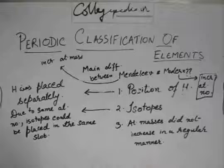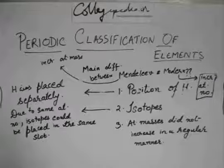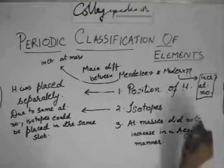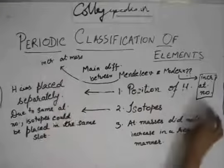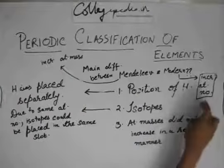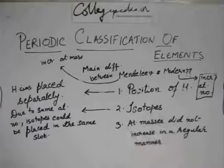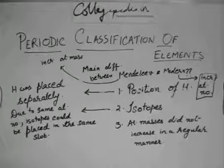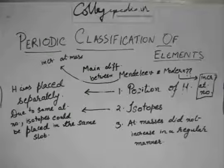And the third thing was again regarding the atomic masses, and modern periodic table again provided a solution with the increasing atomic numbers. So you see how important this correction in the periodic table was - that the problem was that atomic masses did not increase in a regular manner. So what did the modern periodic table do? It arranged them in increasing atomic number.